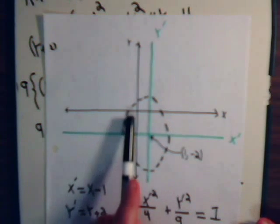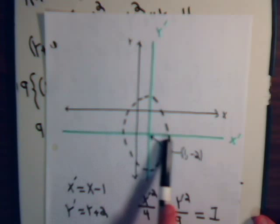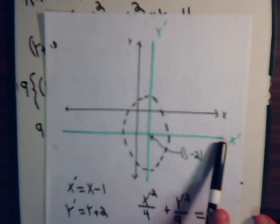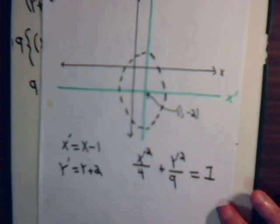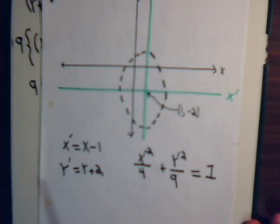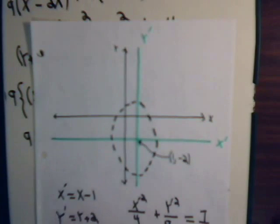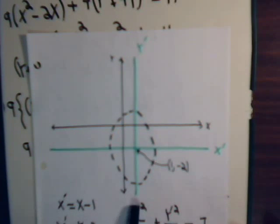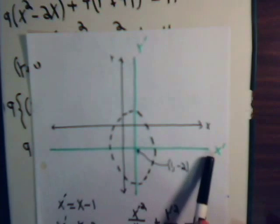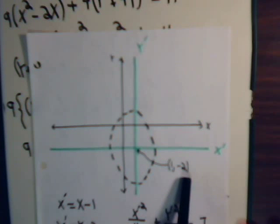So when y equals minus 2, that is the x prime axis. Along here, y prime is always 0, and y prime will always be 0 when y equals minus 2. Likewise, on the y prime axis, x prime will always be 0, and x prime will always be 0 when x equals 1. So here then is the x prime and the y prime axis where they intersect is at the point 1 minus 2.